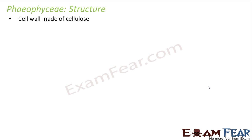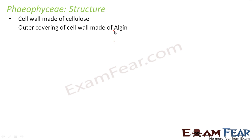Talking about the structure of Phaeophyceae, the cell wall is made up of cellulose. The cell wall also has an outer covering. Like in Chlorophyceae the outer covering was made of pectin, here the outer covering is made up of alginate. Alginate has very good significance — it is often used in food. That agar I mentioned earlier, used in preparation of ice creams and jellies, is made up of alginate.